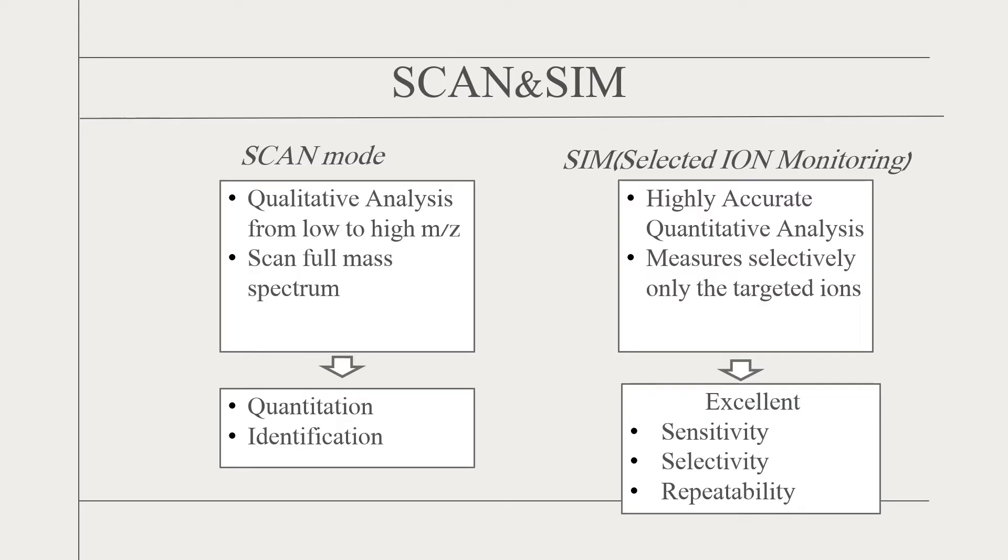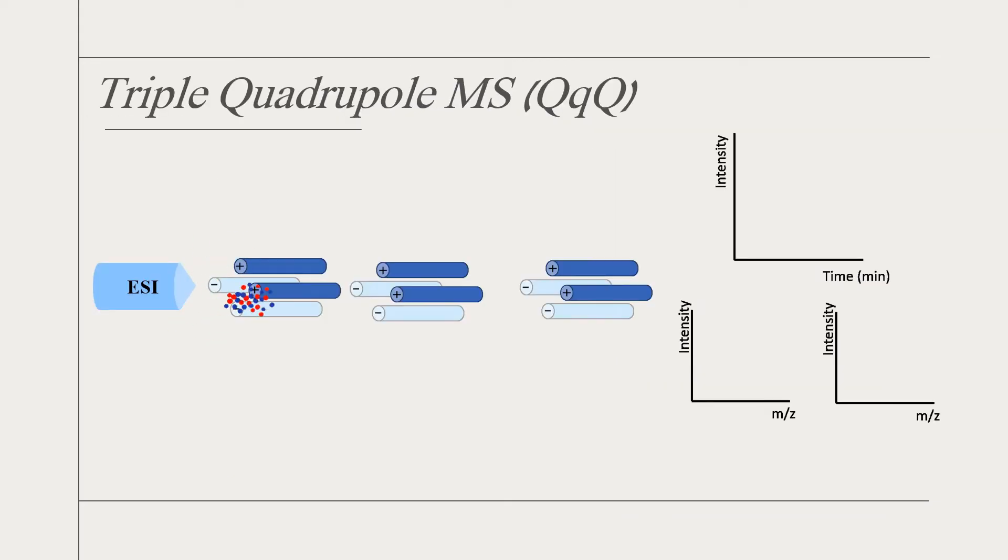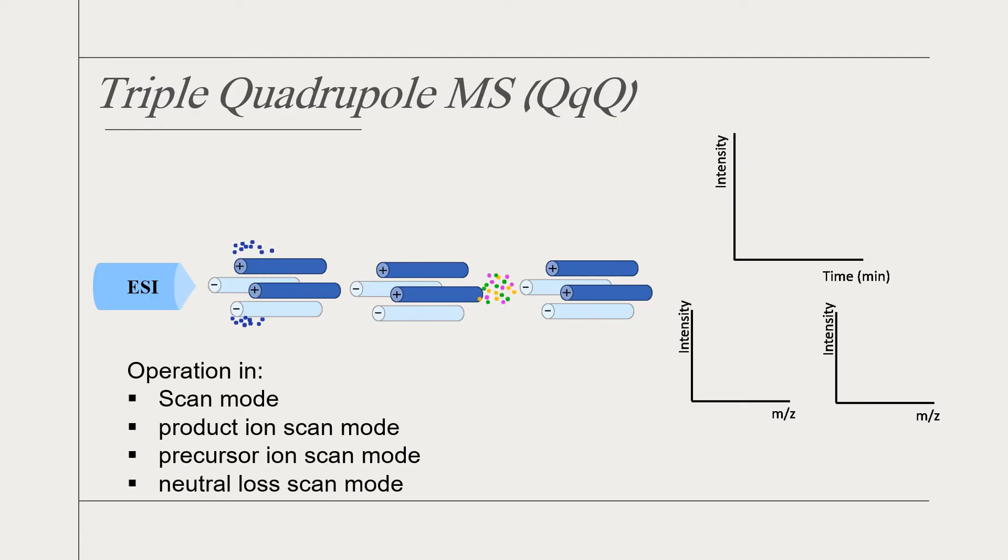LC-MS/MS triple quadrupole system is the most commonly used model in a wide variety of applications. Triple quadrupole LC-MS can be operated in multiple modes such as scan mode, product ion scan mode, precursor ion scan mode, neutral loss scan mode, SIM mode, and MRM mode. The multiple reaction monitoring mode is used in trace level quantitation of compounds. Q1 allows selection of precursor ion, which is fragmented into product ions in the collision cell Q2, then the product ions are filtered in Q3 and detected.